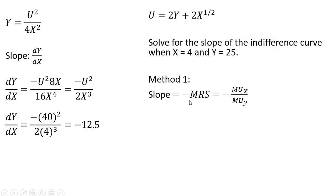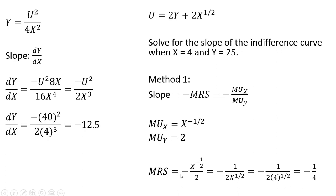Following method one, we take the negative of the marginal rate of substitution. The marginal utility of good x here is just x to the minus one-half power. The marginal utility of good y is just 2. Doing minus the marginal utility of good x over the marginal utility of good y and simplifying — moving x to the minus one-half power into the denominator — and evaluating x at 4, we get a slope of minus one-fourth.